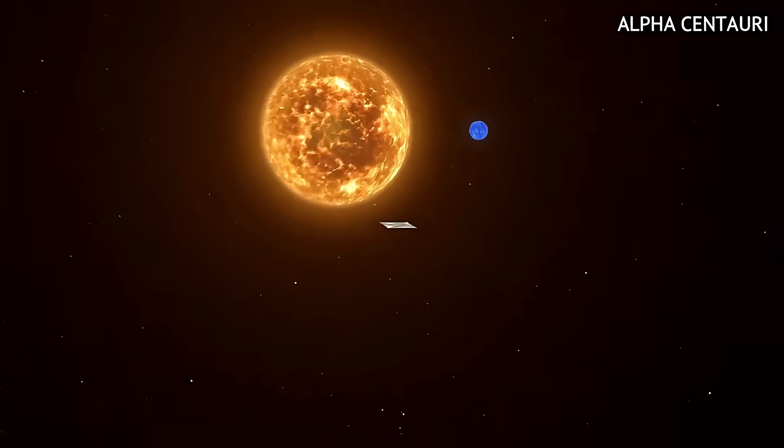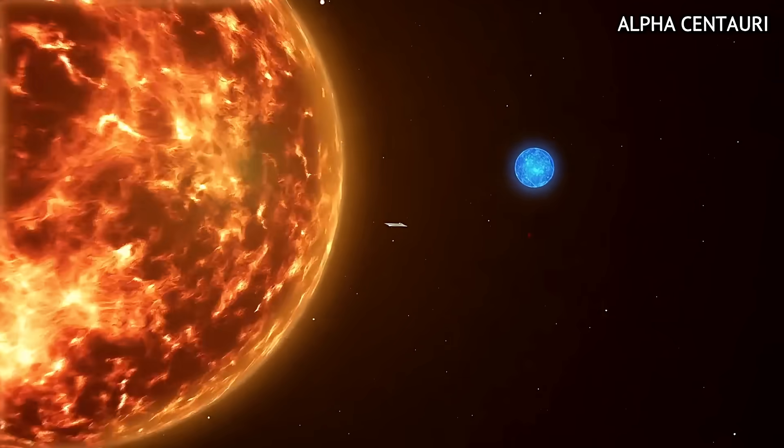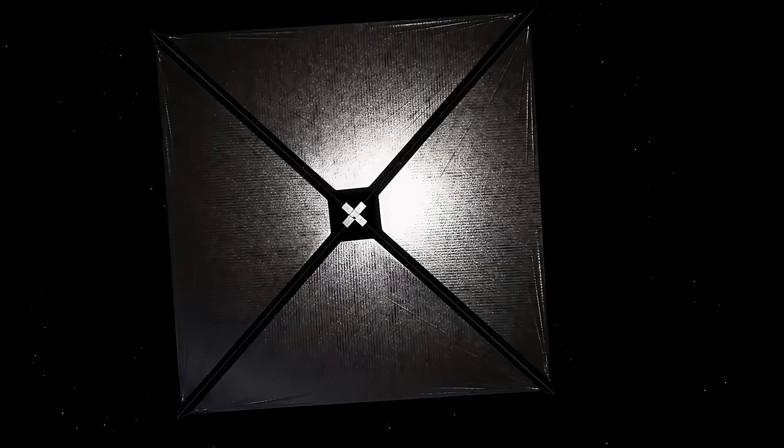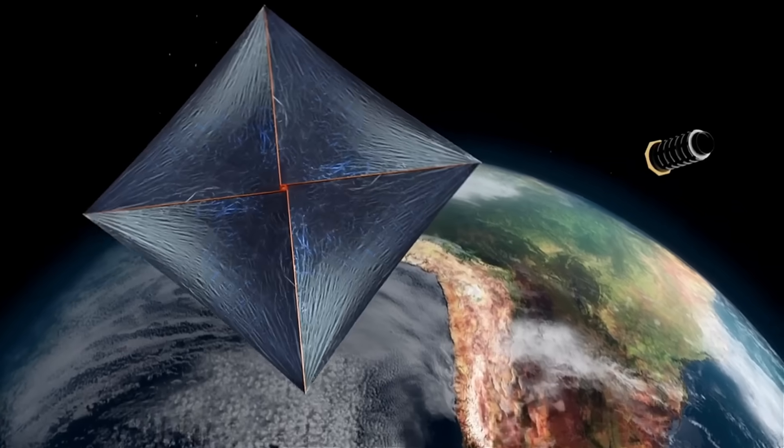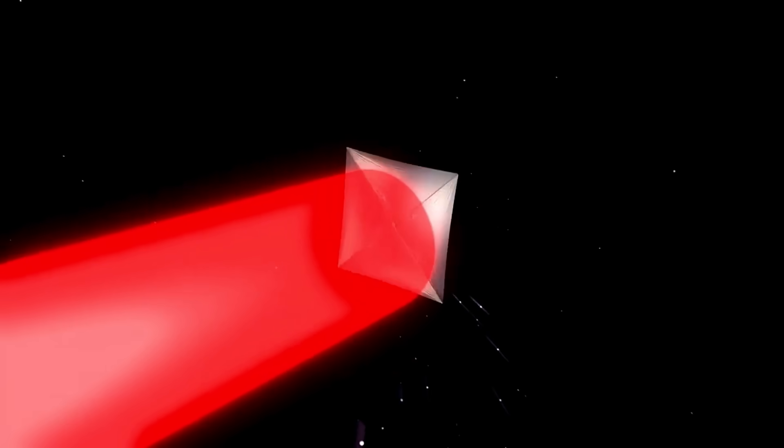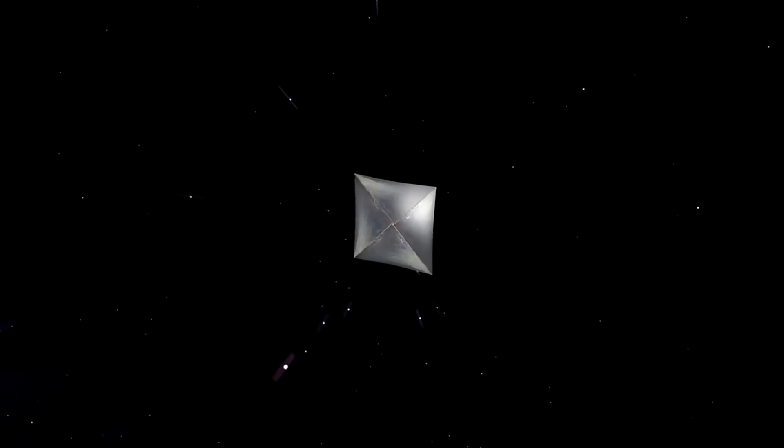This means the probe could travel to Alpha Centauri, our nearest star system, in just over 40 years. The physics behind this is pretty fascinating. When the electrons are moving at such high speeds, something called the relativistic pinch effect happens. Normally, electrons repel each other because they have the same negative charge. But when traveling close to the speed of light, time dilation reduces the relative time experienced by the electrons, preventing them from repelling each other significantly. This keeps the beam together and focused, allowing it to keep delivering thrust, even when it's far from the sun.